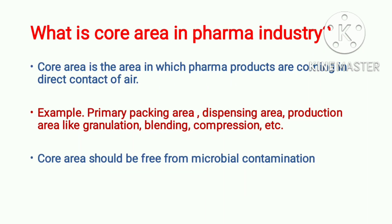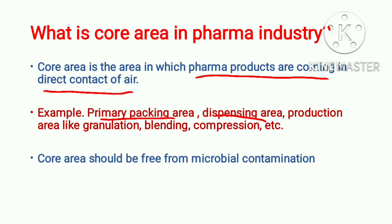First of all, we will know what is a core area in pharma industry. The core area is the area in which pharma products are coming in direct contact with air. Examples of core areas are: primary packing area, dispensing area, production area, granulation area, blending area, compression area, and sampling area. Our core area should be free from microbial contamination because pharma products are coming in direct contact with air here.